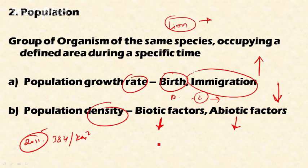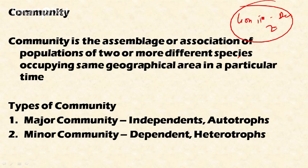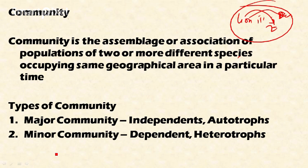This is population — the second level of organization. The third level is community. A community is the assemblage or association of populations of two or more different species occupying the same geographical area at a particular time. For example, different species like lion, tiger, deer, zebra, and antelope occupying the same area and interacting — such as a lion preying on zebra for survival — form a community.